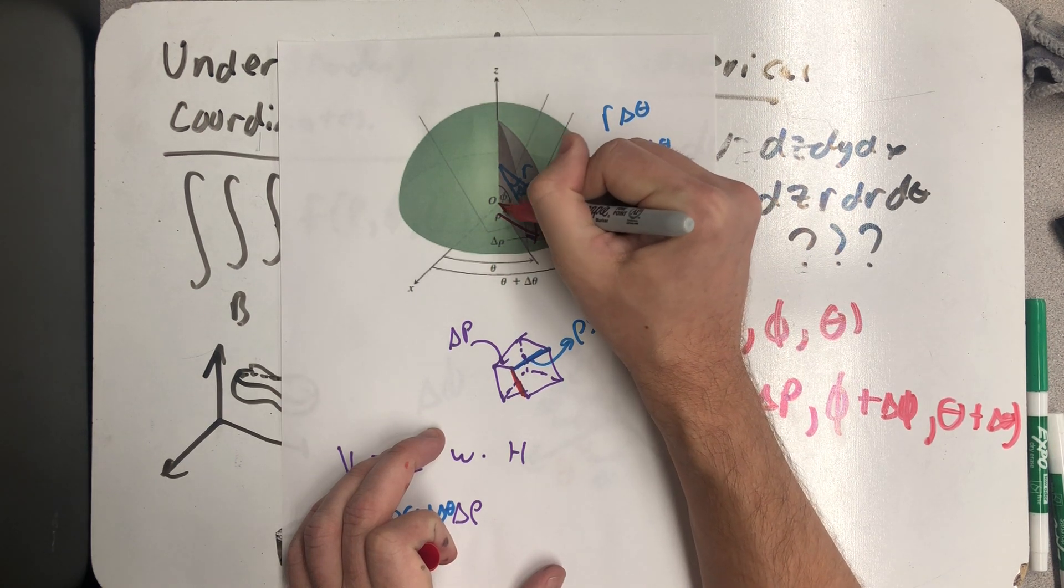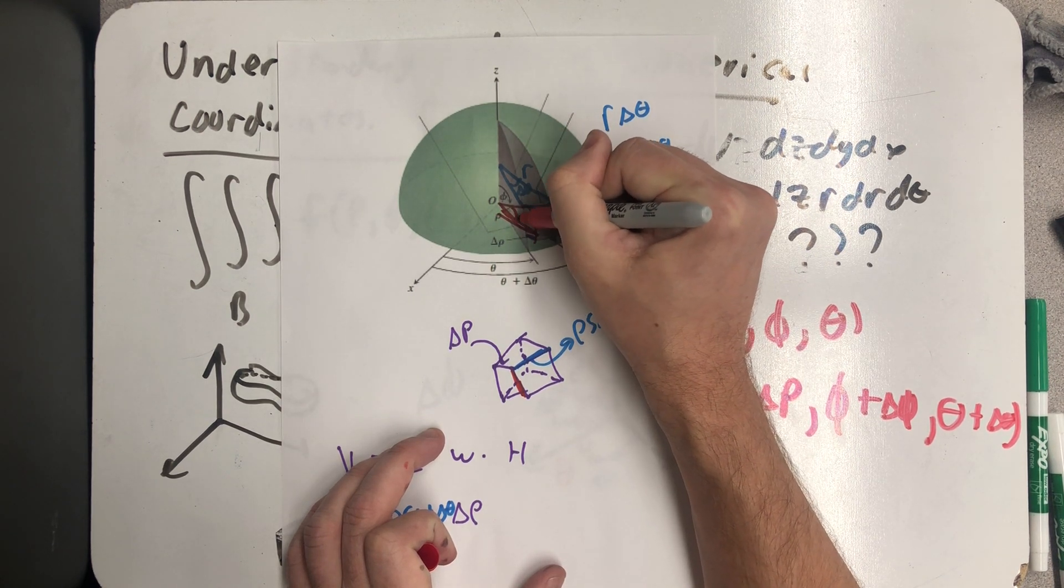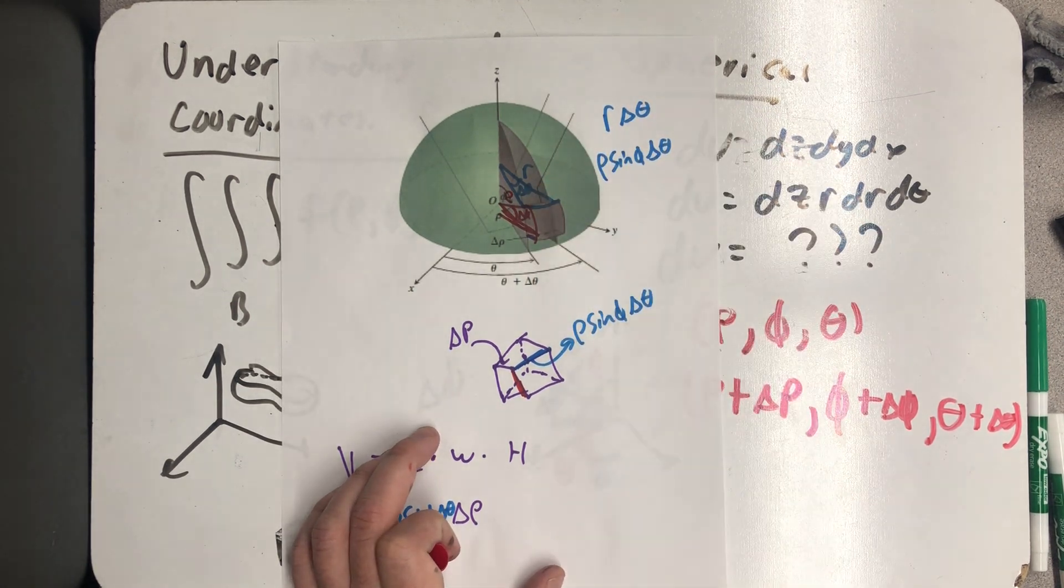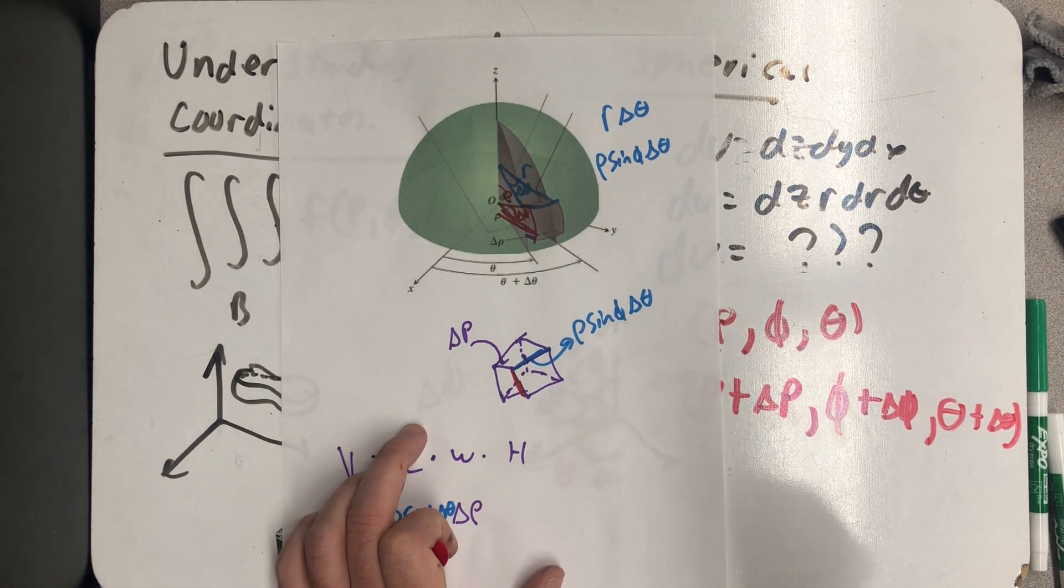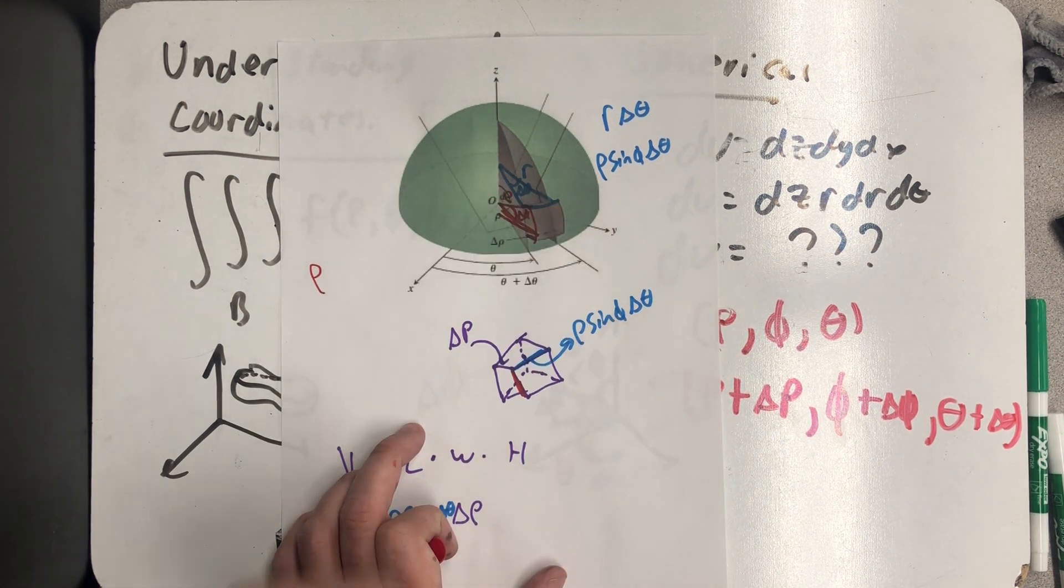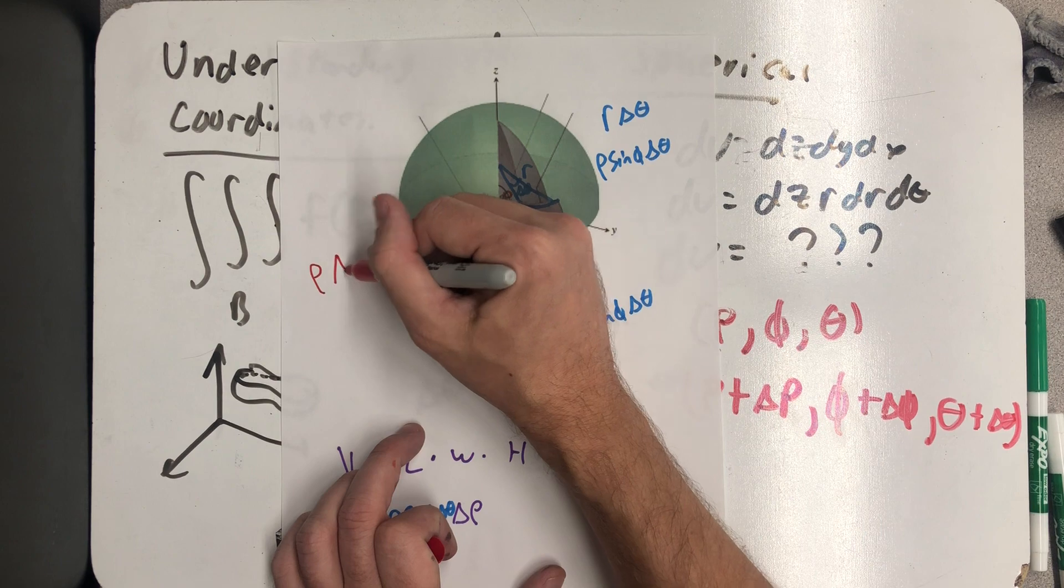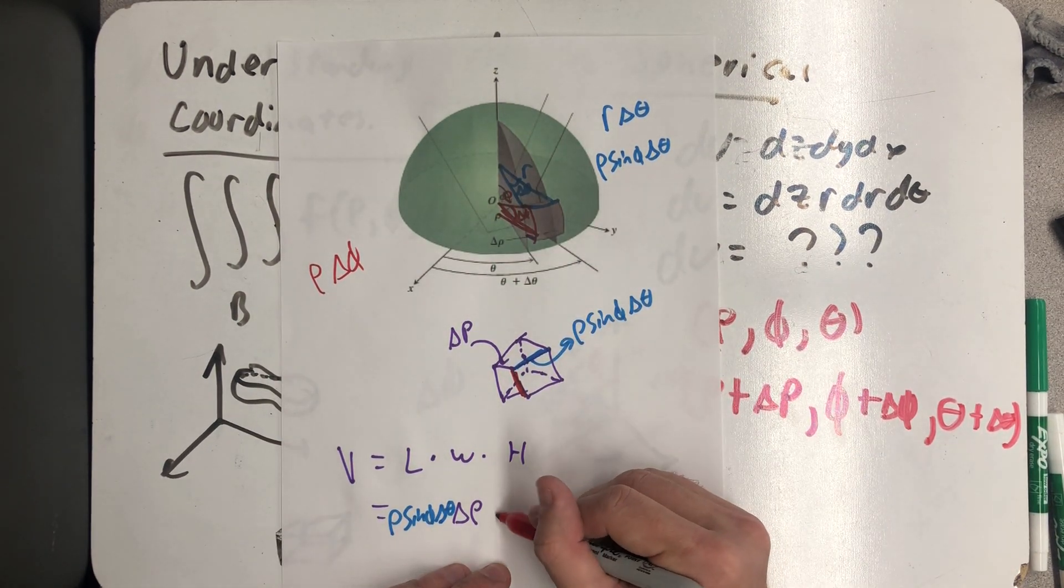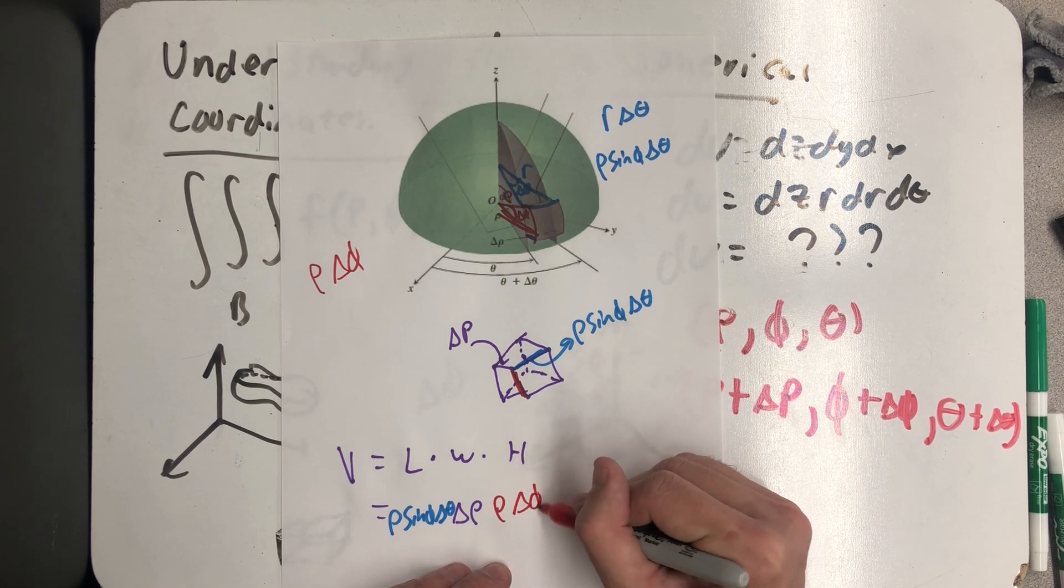Well, those distances coming from the origin have a Δφ in there. And that length is actually ρ itself. So again, using the arc length formula, that would be that length ρ times Δφ. And that's the height of my rectangular prism here. So ρ Δφ.